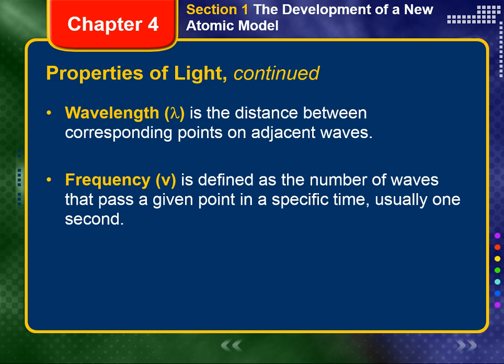Frequency, represented by the Greek letter nu, is defined as the number of waves that pass a given point in a specified time, usually one second. Frequency is represented in waves per second. One wave per second is called a Hertz, Hz, named for Heinrich Hertz, who was a pioneer in the study of electromagnetic radiation.